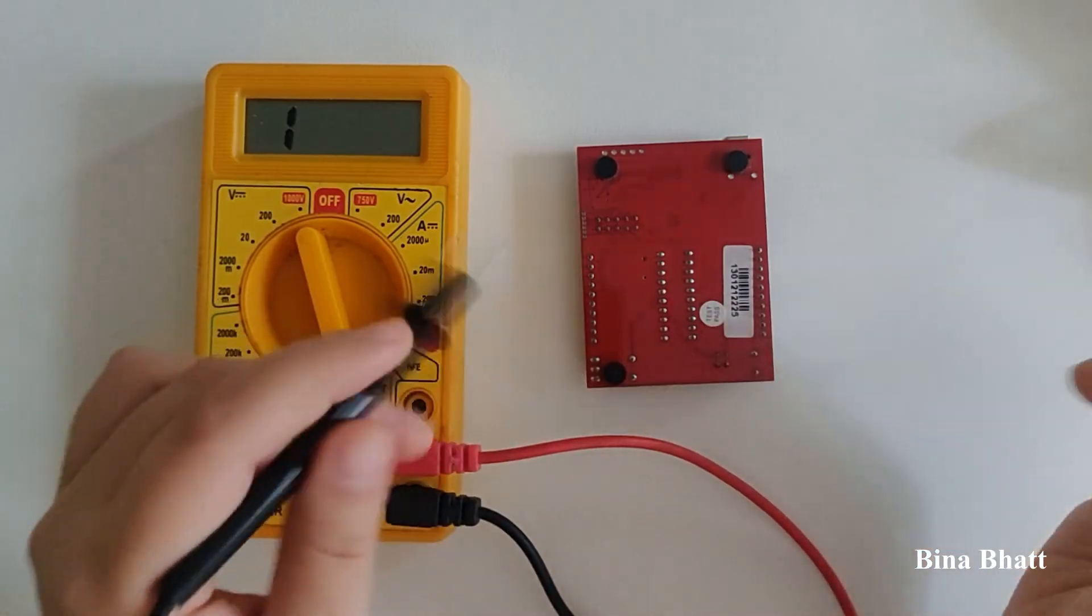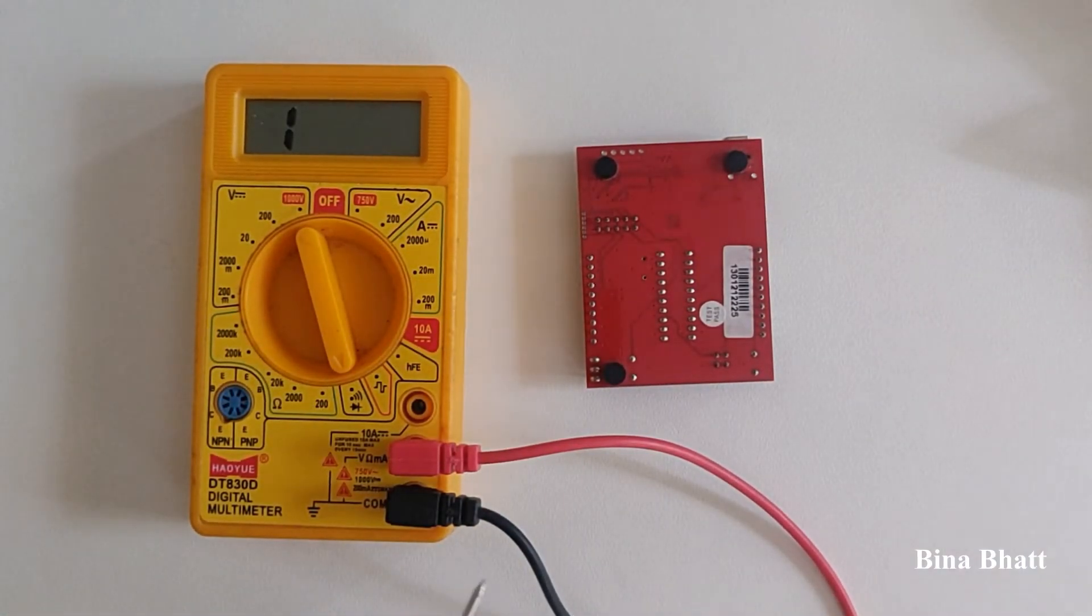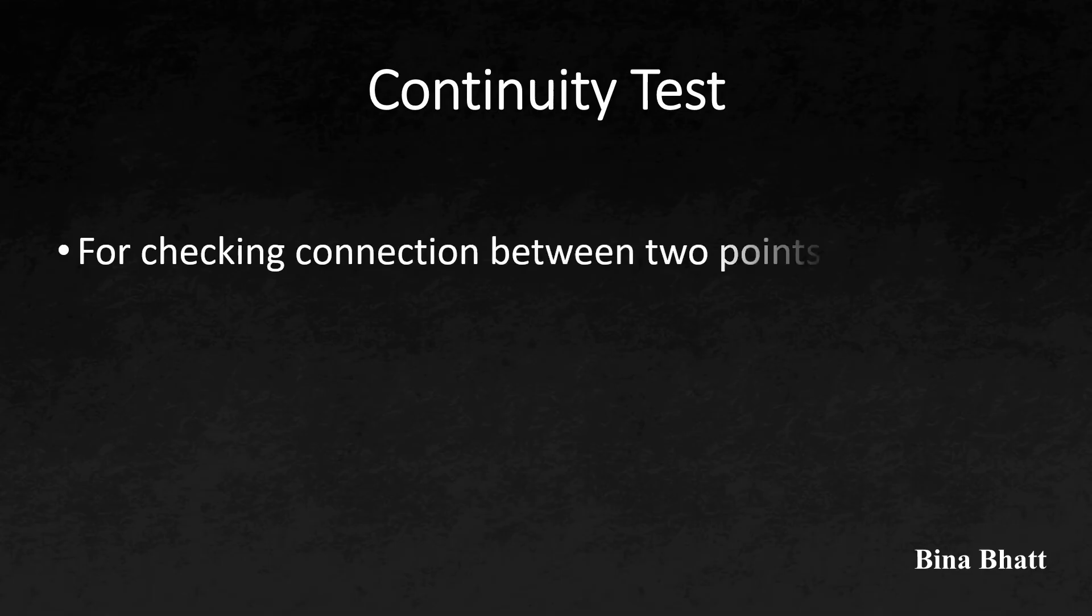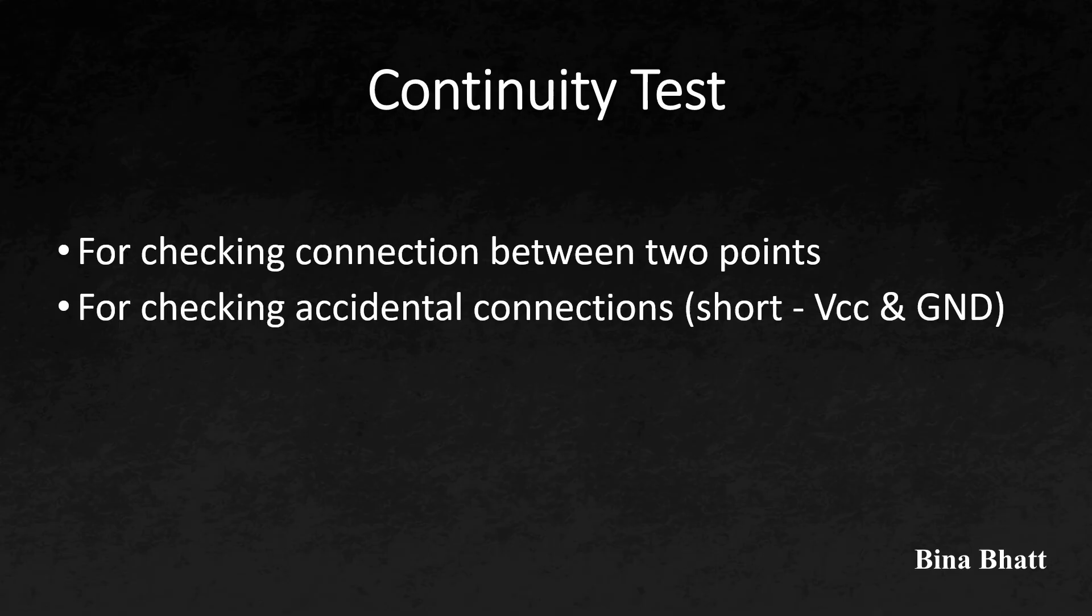Just like that, you can take any PCB board and check if two points that are supposed to be connected are actually connected by using the continuity function. You'll use this function a lot. You'll also use it to check whether two points that aren't supposed to be connected in a circuit - like VCC and ground - have any short circuit.